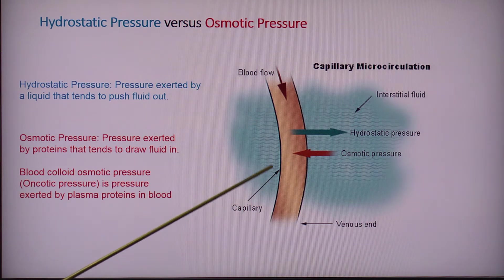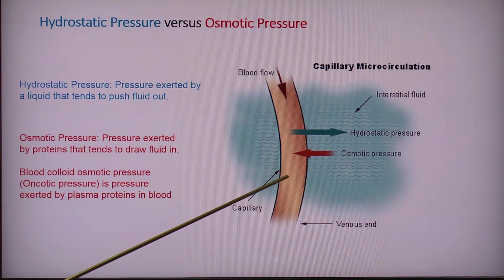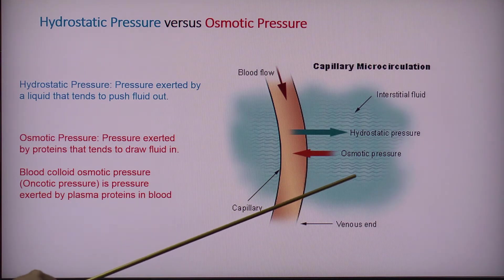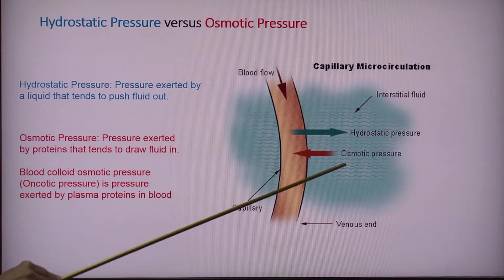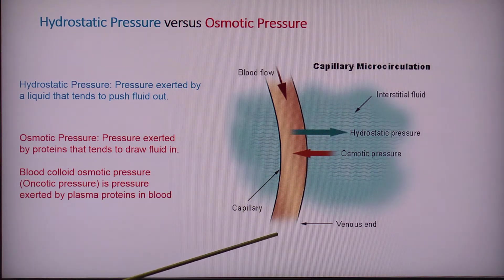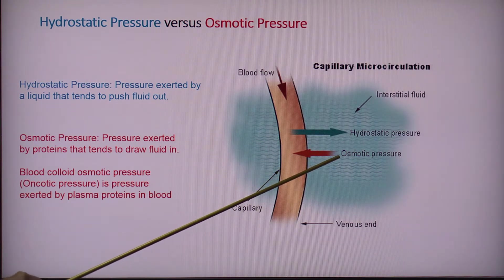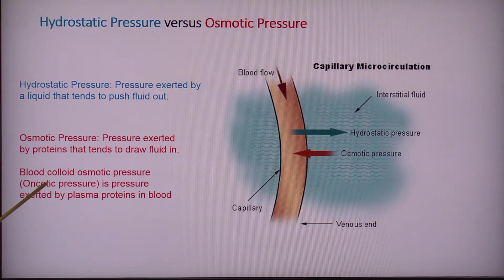On the other hand, osmotic pressure belongs to solutes within the fluid that will pull the fluid in, and these will always oppose each other. If we are particularly talking about proteins as solutes, we call this not only osmotic pressure — we can call it colloid osmotic pressure or oncotic pressure.